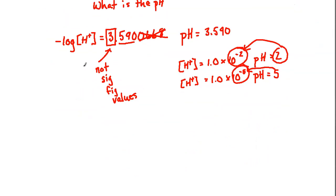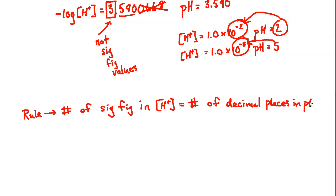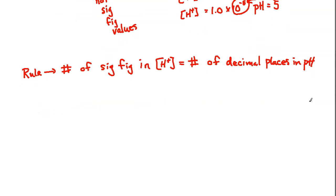So again, if we were going to put a rule here, the rule for how this is going to work is that the number of significant figures in the H+ in the molarity value is going to equal the number of decimal places in pH. Okay, so I will put one more up here just for practice, and then we're going to wrap this up because I just wanted to address this.